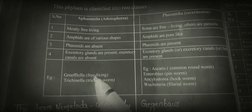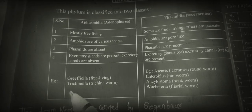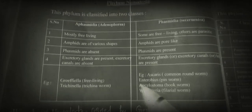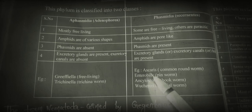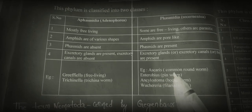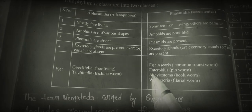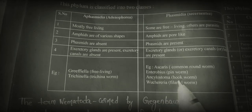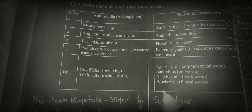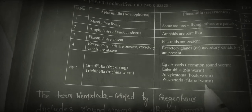Examples for Aphasmidia include Griffiella, which is free-living, and Trichinella, the trichina worm. Examples for Phasmidia include Ascaris lumbricoides, the common roundworm; Enterobius, the pinworm; Ancyclostoma, the hookworm; and Wuchereria, the filarial worm.